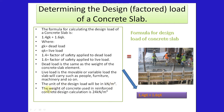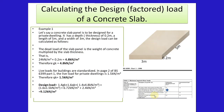The weight of concrete used in reinforced concrete design calculation is 24 kilonewtons per meter cubic. On the right you can see the formula for design load of a concrete slab, which is equal to 1.4 GK plus 1.6 GK.